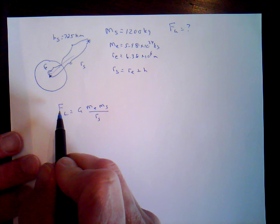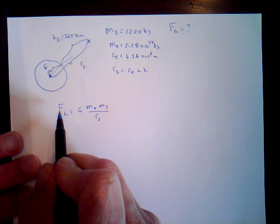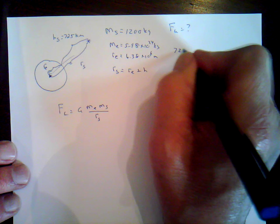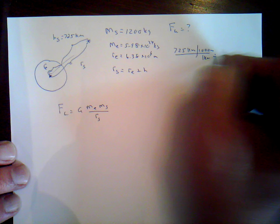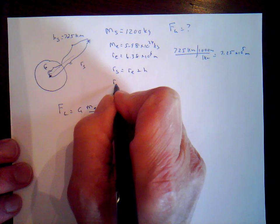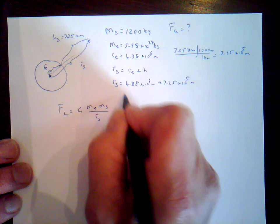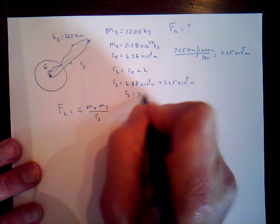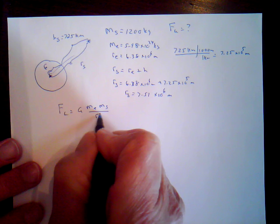The orbital radius of the satellite is 6.38 times 10 to the 6 meters plus 7.25 times 10 to the 5th meters, which gives us about 7.51 times 10 to the 6 meters. That is the orbital radius of the satellite. Don't forget to square that number in the denominator.